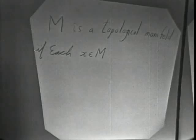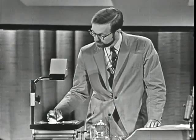In this case, the definition comes out that each point X in M has a neighborhood U in M which is isomorphic — and in this case isomorphism means homeomorphic — to an open set in the standard Euclidean space R^M.